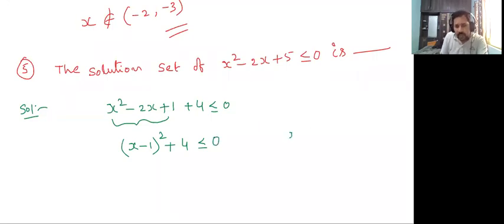Generally we know that x minus 1 whole square means it is always greater than or equal to zero. So square is there now, negative impossible. Square is there now, negative impossible.